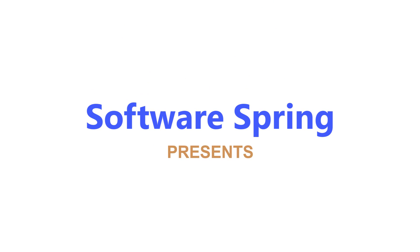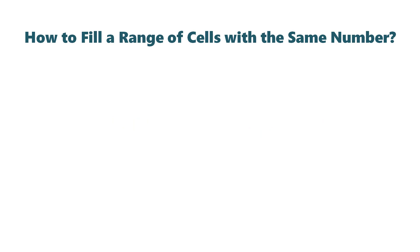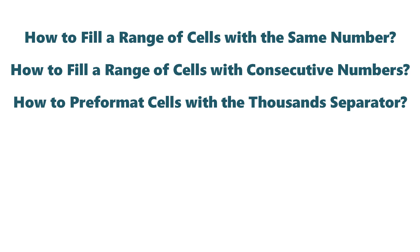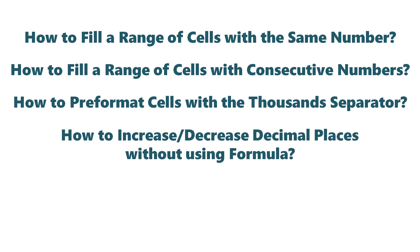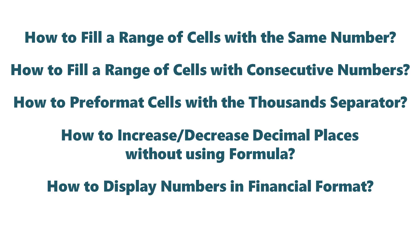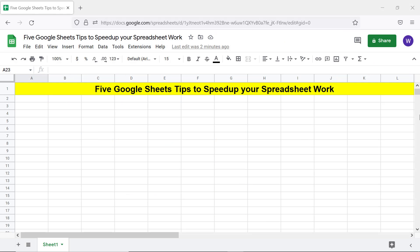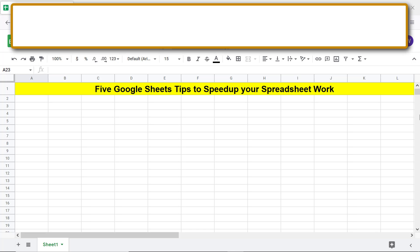Software Spring presents five Google Sheets tips to speed up your spreadsheet work. These tips pertain to: filling a range of cells with the same number, filling a range with consecutive numbers, pre-formatting cells with the thousand separator, increasing or decreasing decimal places without using a formula, and displaying numbers in financial format.